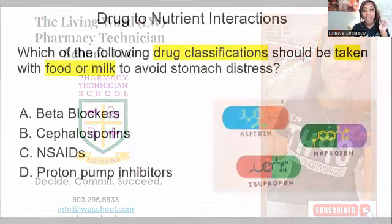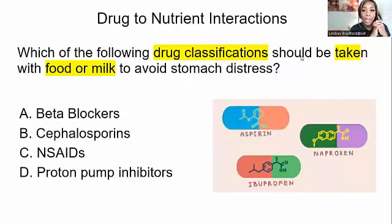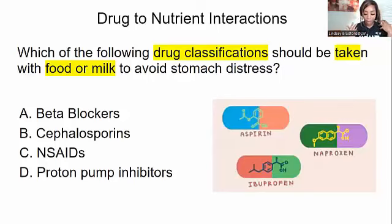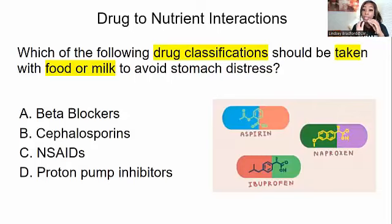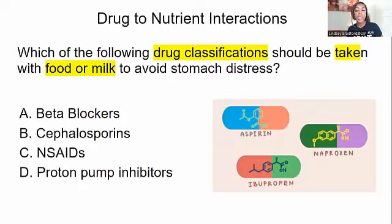The first slide talks about drug-to-nutrition interactions. When we think about drug-to-nutrition interactions, we are thinking about drugs having an issue with food — we're trying to see what food causes what reactions with the drug. When looking at these drug classifications, we want to know which drug is used to treat what, and which drug should not be taken with milk or food, or should be taken with food or milk to avoid stomach distress. One of the common side effects of drugs is stomach distress, so anytime you see that as an answer choice, that's probably going to be your answer.